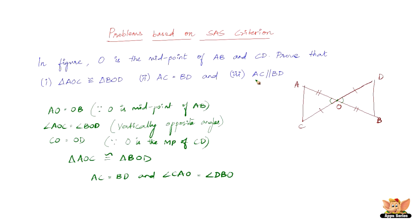Now, coming to proving AC being parallel to BD, we have AC and BD are two lines intersected by transversal AB such that angle CAO equals angle DBO, that is alternate angles are equal.